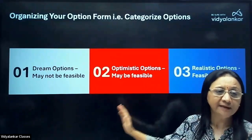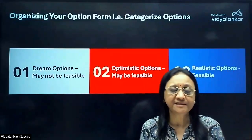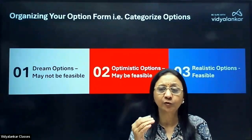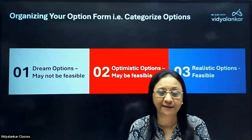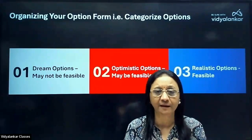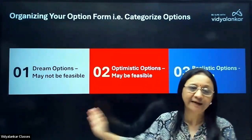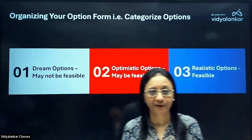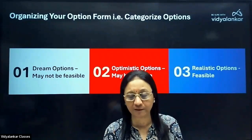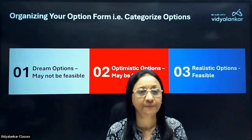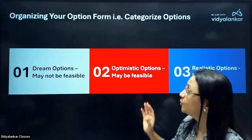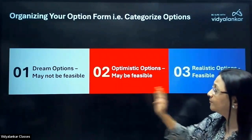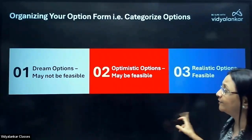After your dream options, have optimistic options — jaisi agar cutoff thoda neeche aata hai toh mujhe mil sakta hai, that's what optimistic means. And then you must have realistic options, yaha toh mujhe definitely milega, for this particular college and branch. So remember, organize your option form as dream, optimistic, and realistic.